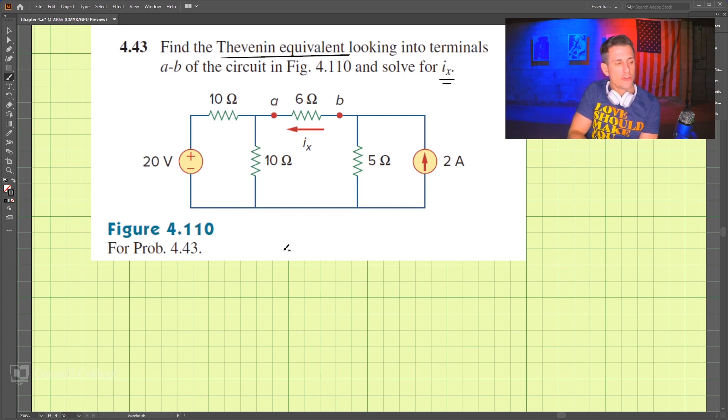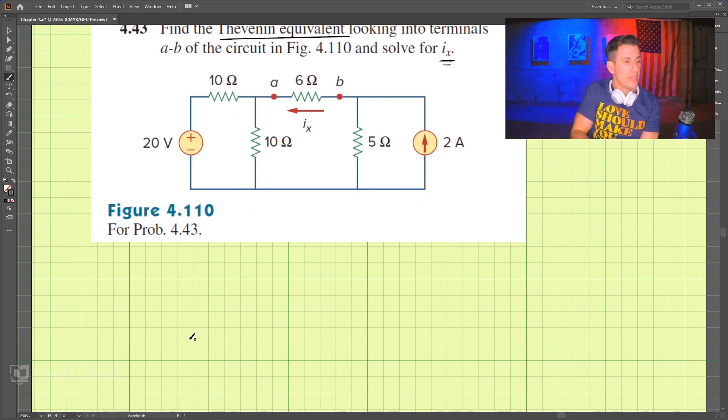So let's solve this problem. The first step to finding the Thevenin equivalent is to turn off all independent sources. So turn off this 20 volts, turn off the 2 amps. So turning that off, we have a short circuit here,